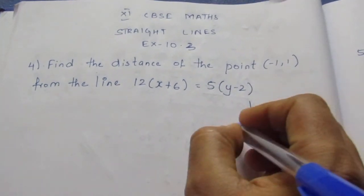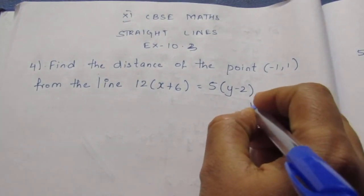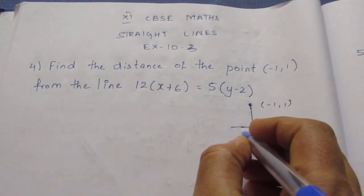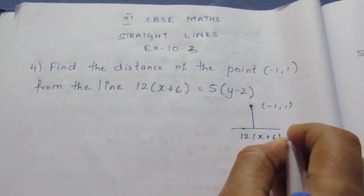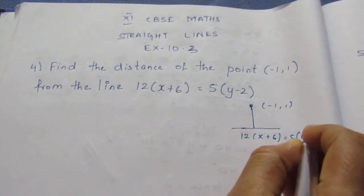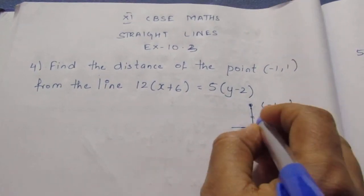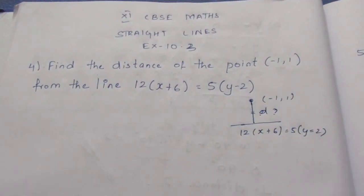That is, this is the point (-1, 1) and if this is the equation, we need to find the distance between this. We need to find the distance of this line.